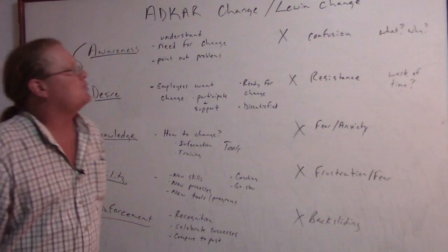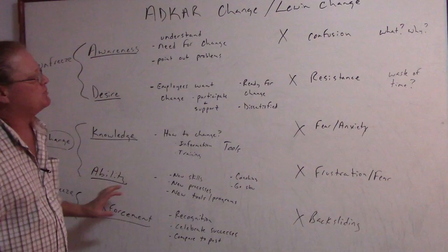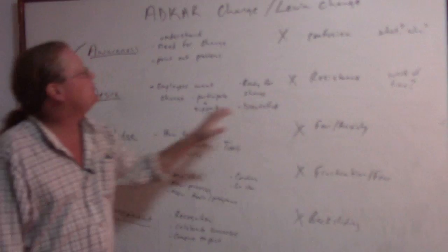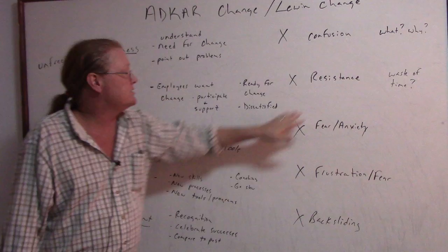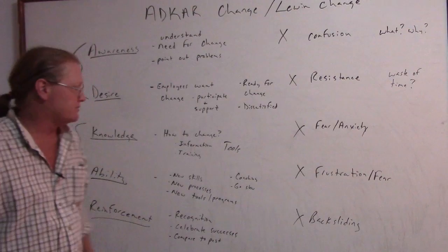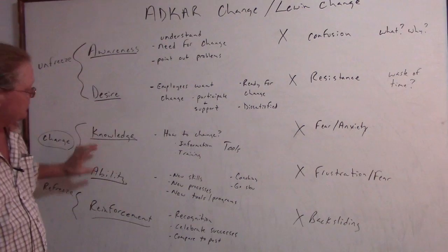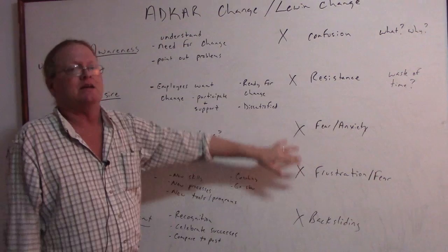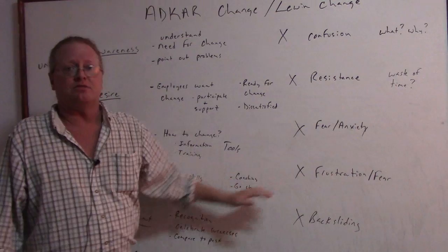This model is interesting — once I looked at it for a while I noticed it's really Lewin's change model with a few extra steps. What I like is that it explains what the result will be if we do not achieve each step: Awareness — without it, confusion. Desire — without it, resistance. Knowledge — without it, fear and anxiety. Everybody hates change. Ability — without it, frustration, fear, and backsliding. As a manager, you should pay attention to this model because it shows the results you'll get if you don't complete each step. ADCAR change model in comparison with Lewin's change model, and the consequences of failure.